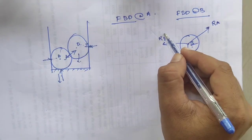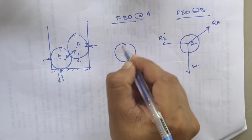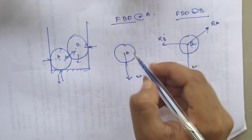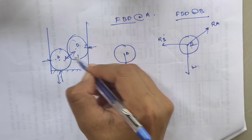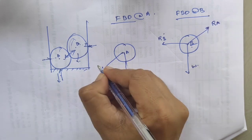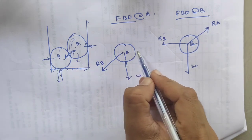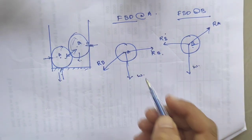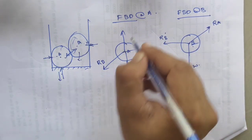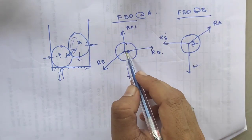Next, after finding all these three reactions, we can take the free body diagram at A. Here there will be one weight W acting. There is a reaction from body B over A, so it will pass through like this — we can take it as RB. There is a support from the left side surface, which we can take as RA. And there will be a reaction from the ground surface, which we can take as RA1. This is the free body diagram for this figure.